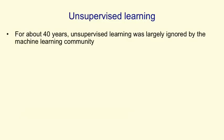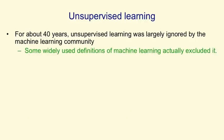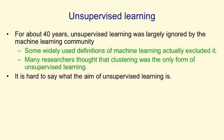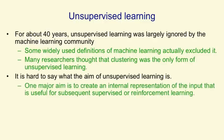Unsupervised learning will be covered in the second half of the course. For about 40 years, the machine learning community basically ignored unsupervised learning except for one very limited form called clustering. In fact, they used definitions of machine learning that excluded it — defining machine learning as mapping from inputs to outputs — and many researchers thought that clustering was the only form of unsupervised learning. One reason for this is that it's hard to say what the aim of unsupervised learning is. One major aim is to create an internal representation of the input that is useful for subsequent supervised or reinforcement learning.